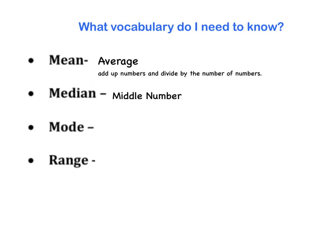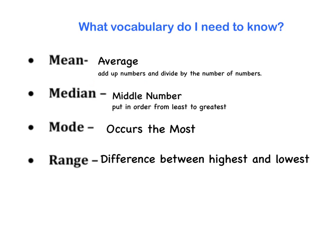The median is the middle number. And in order to find the middle number, you need to put the numbers in order from least to greatest. The mode is the number that occurs the most in the data set. And the range is the difference between the highest number and the lowest number in the data set.